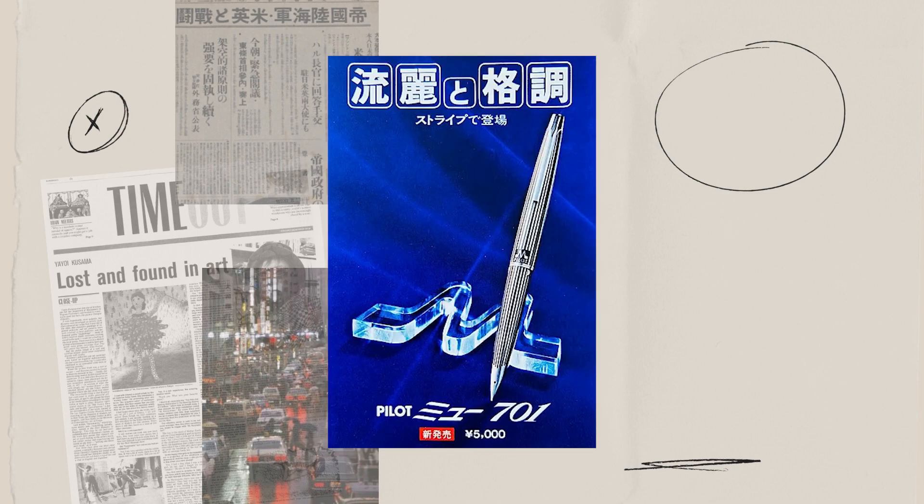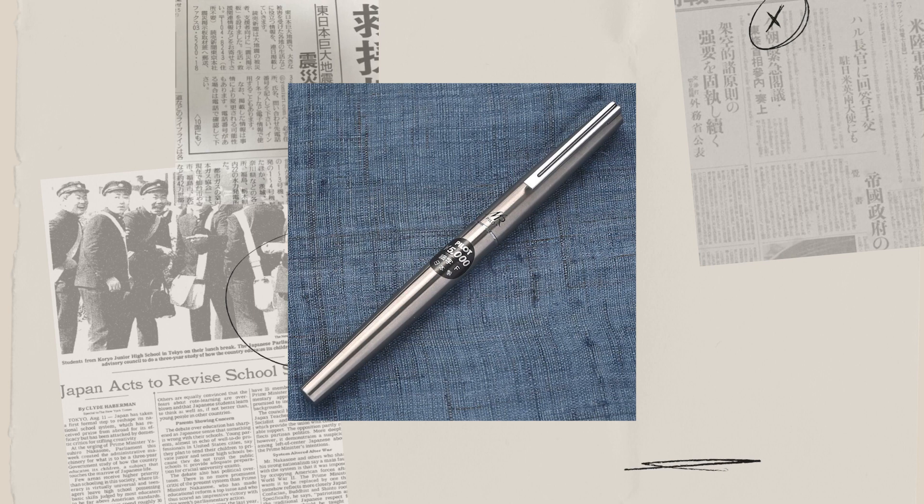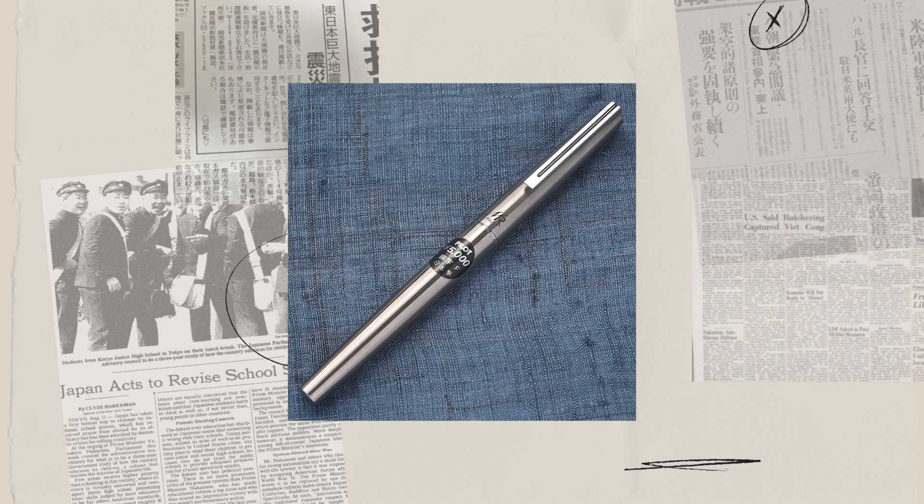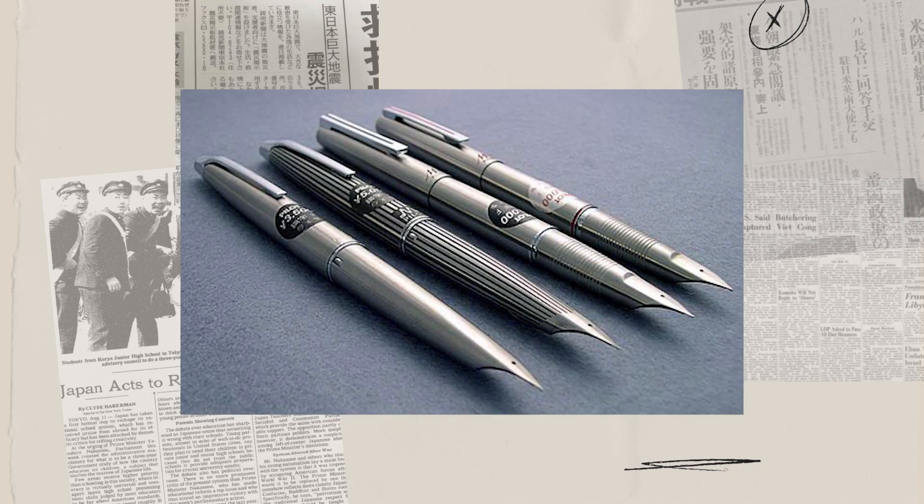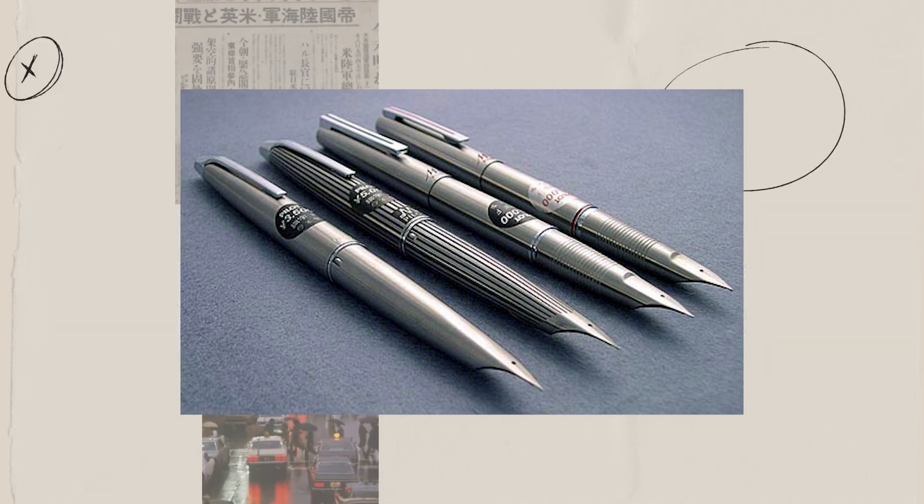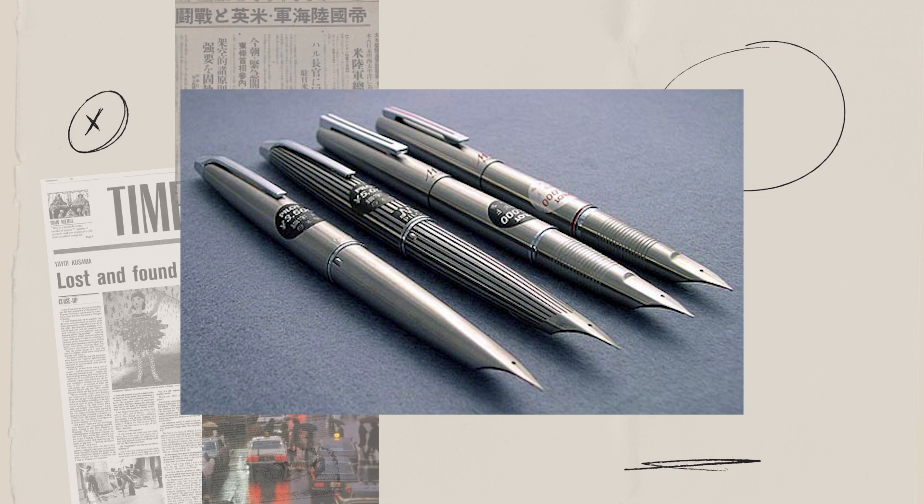This limited distribution added to their exclusivity. Additionally, the materials used in the construction of the Mu and Murex, including stainless steel and other high quality components, contribute to their durability. Many of these pens have stood the test of time and are cherished by collectors. Moreover, the Pilot Mu and Murex embody the technological innovation and quality that Japan was renowned for during this era. They featured cutting-edge nib design, ink delivery systems, and a sleek futuristic design.